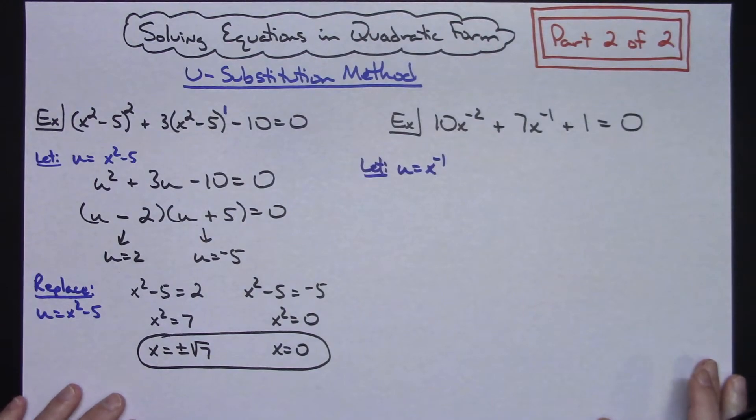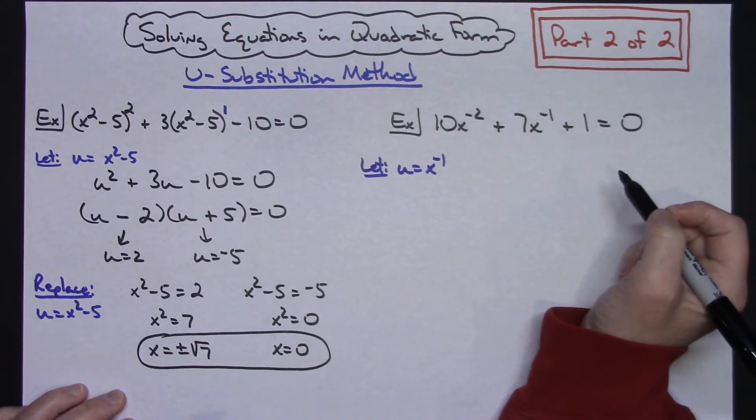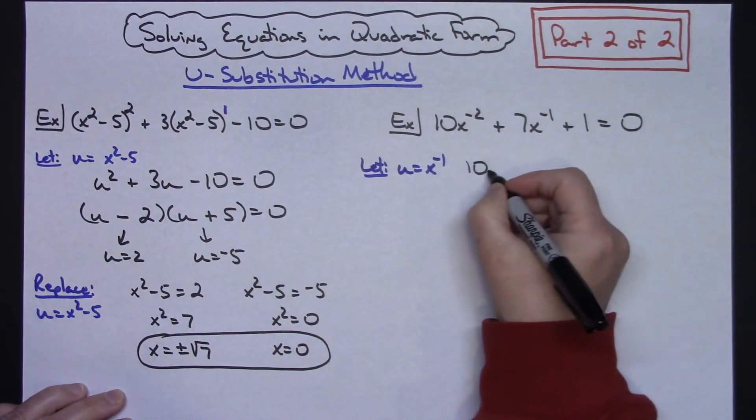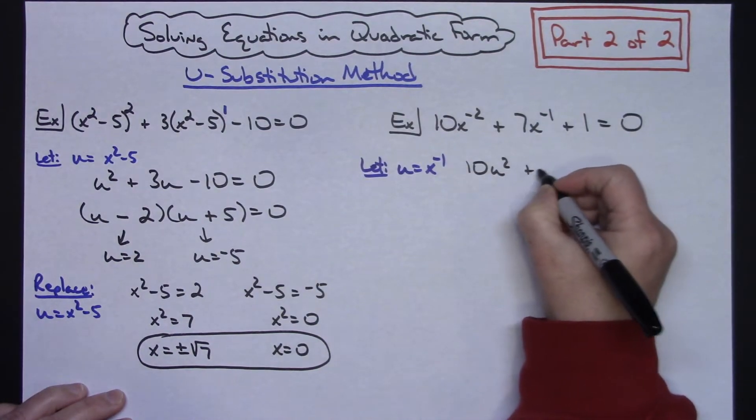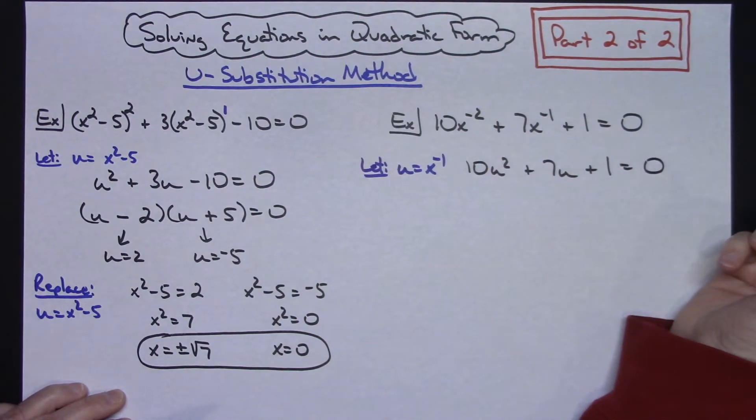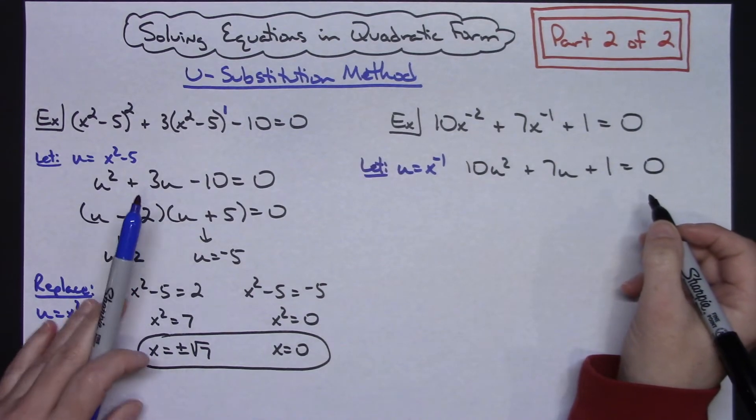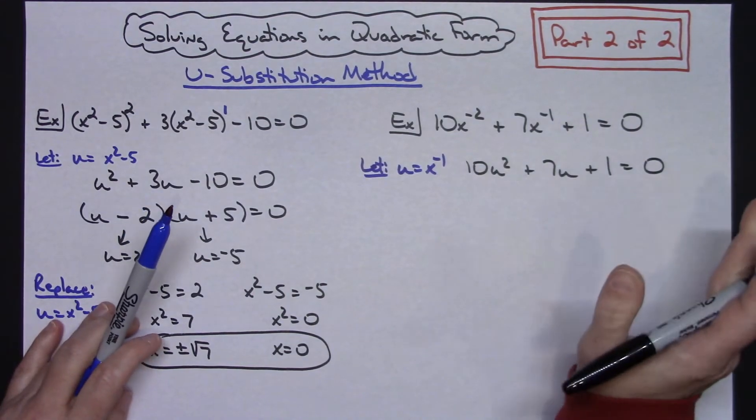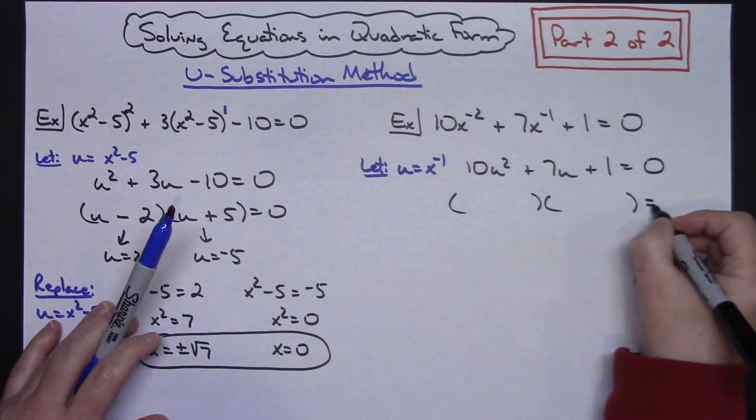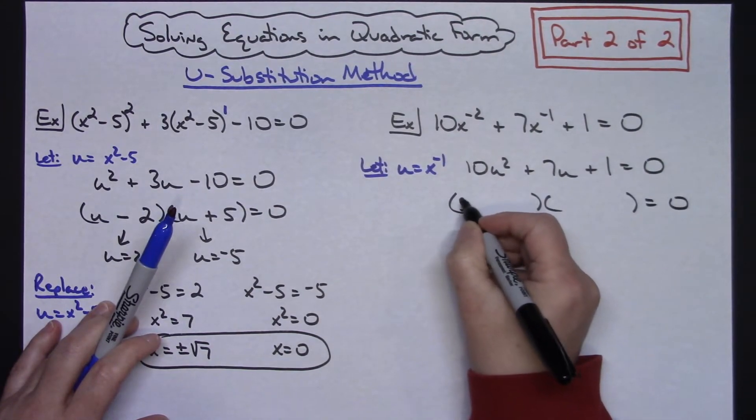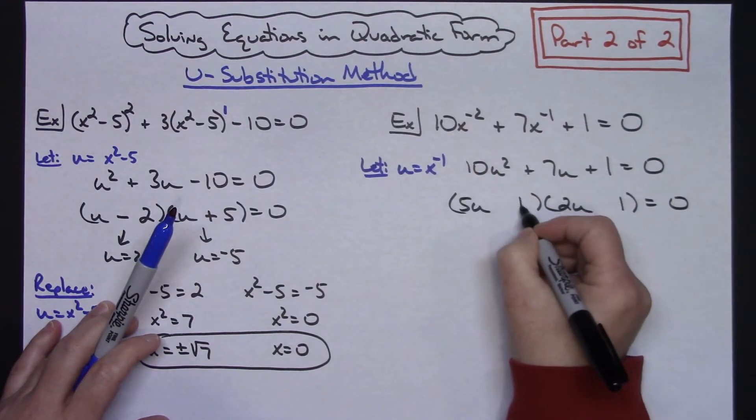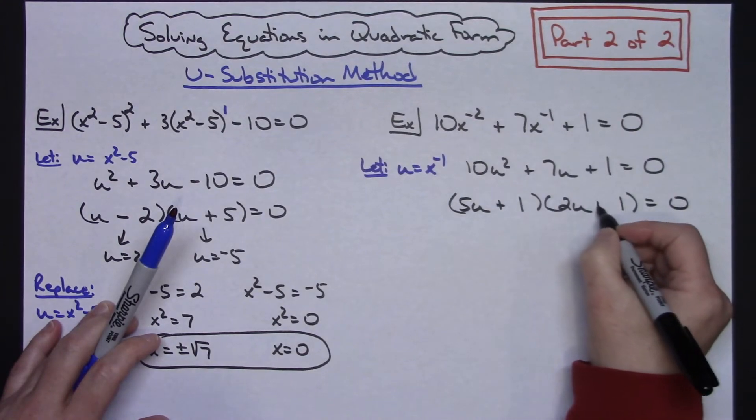That then allows us to rewrite this equation in terms of u. So this will be 10u squared plus 7u plus 1 equals 0. I've now created a trinomial here that I can guess and check and factor easily. Let's use a 5u and a 2u. Only choices for 1 would be 1 and 1. Everything's positive, so plus and plus.